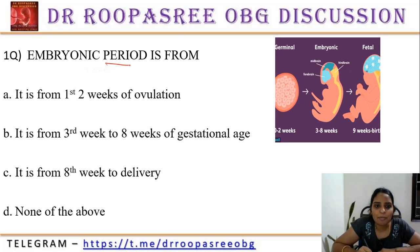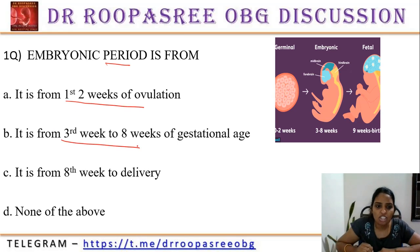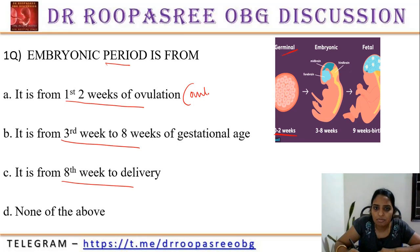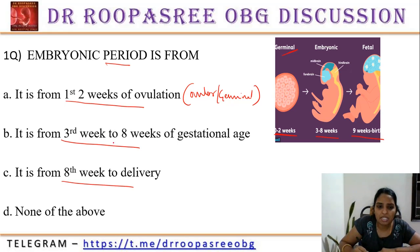The embryonic period is from: first weeks of ovulation, third week to eighth week of gestational age, or eighth week to delivery? The germinal or ovular period is zero to two weeks. The embryonic period is from three to eight weeks, and the fetal period is from nine weeks to birth. So the answer is: embryonic period is from third week to eighth week of gestational age.